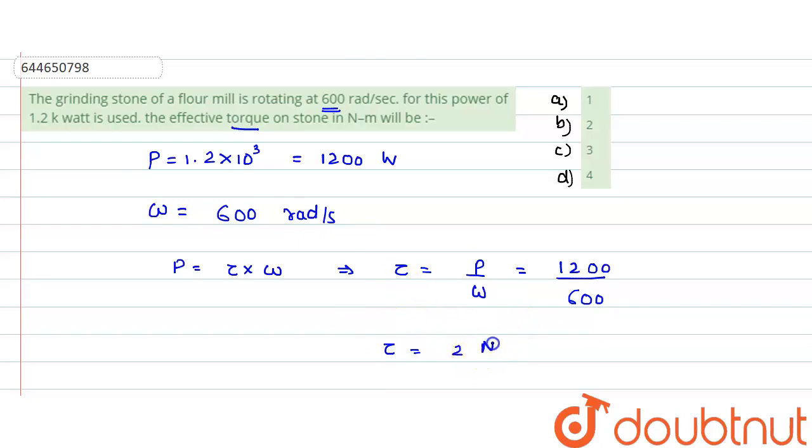Okay, so this is our correct answer, 2 newton meter. So which option is the correct option? Torque would be 2 newton meter, so this is our option B. Option B is our correct option.